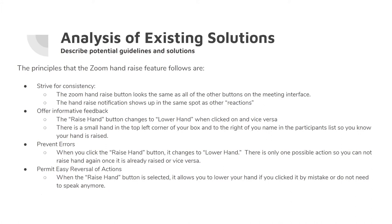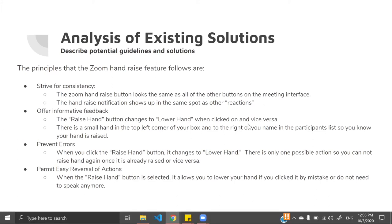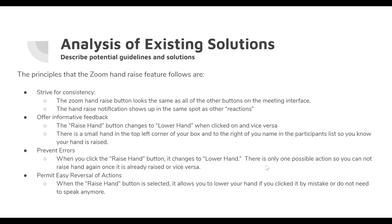The principles this hand raise feature conforms to include: first, it strives for consistency — the hand raise button looks the same as all other buttons on the meeting interface, and the notification shows up in the same spot as other nonverbal reactions. Second, it offers informative feedback — the raise hand button changes to 'lower hand' when clicked, and a small hand icon appears in the top left corner of your video box and next to your name in the participants list. Third, there is error prevention — once your hand is raised, there is only one possible action, so you cannot raise it again until it is lowered.